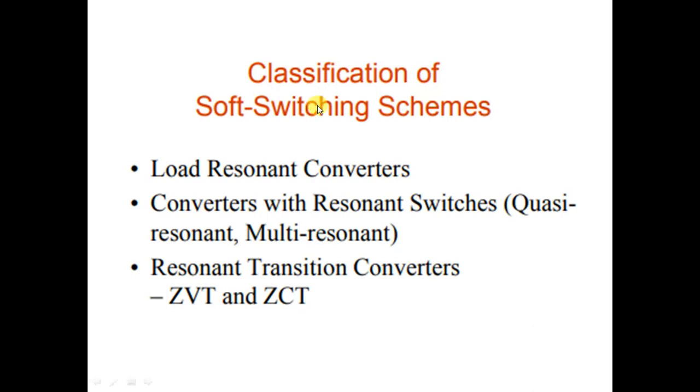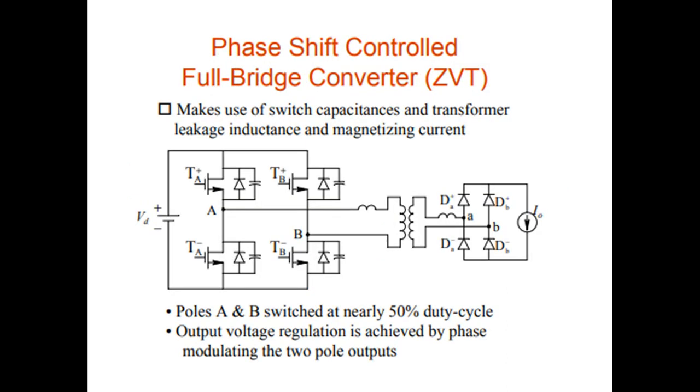Classification of soft switched converters: load resonant converters, converters with resonant switches, ZVT and ZCT converters. Suppose if I use the inductance of the transformer, say leakage inductance of the transformer and the capacitance of the device and produce that zero voltage. Such converters are called ZVT converters.